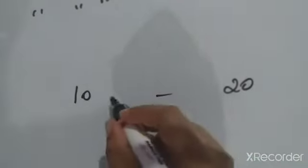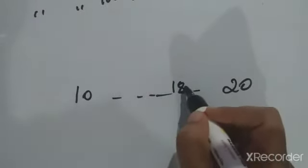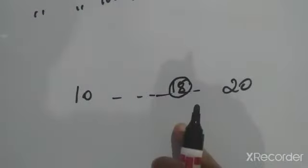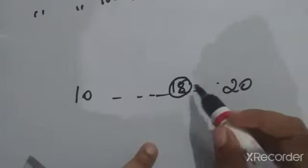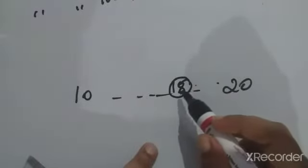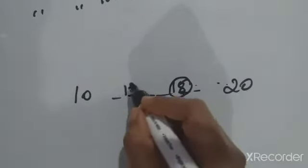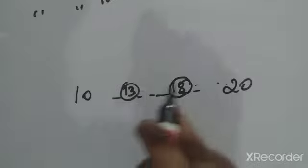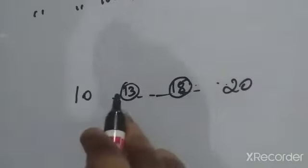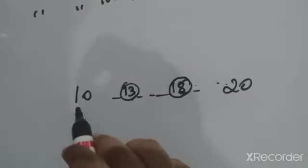Now, for numbers between 10 and 20: if the number is 18, which is the nearest — 10 or 20? 20 is the nearest, so the round off of 18 is 20. One more example: for the number 13, we check whether 13 is nearest to 10 or 20. Since 13 is nearest to 10, we round off 13 as 10.